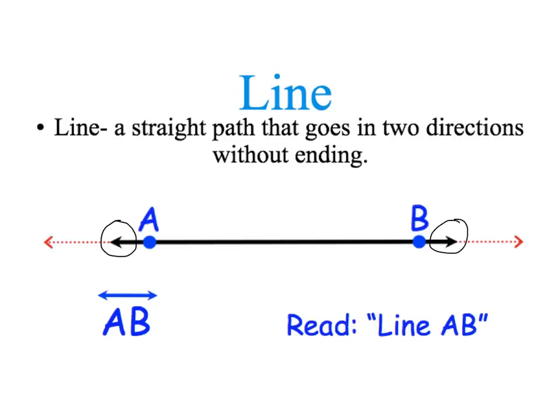You would read this as line AB, and you would write it like this, with AB and the arrow on each end.